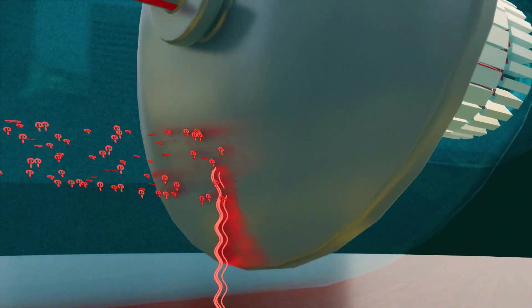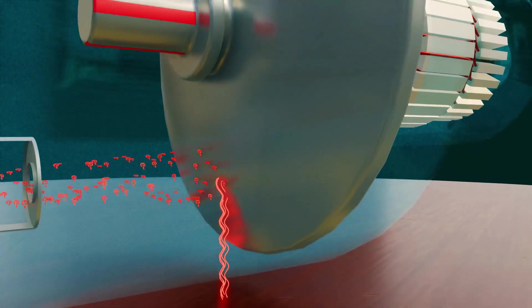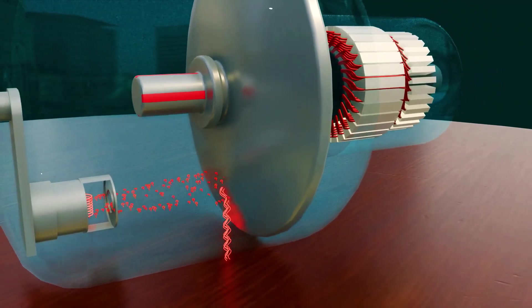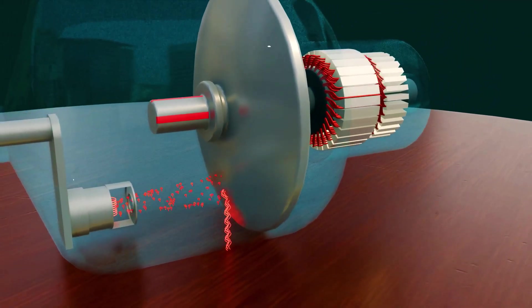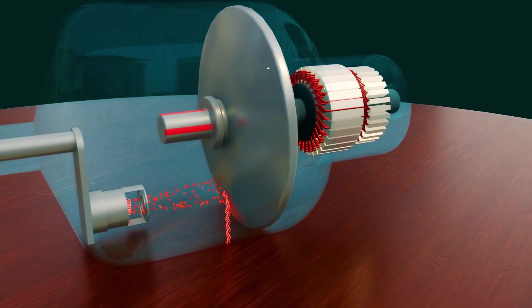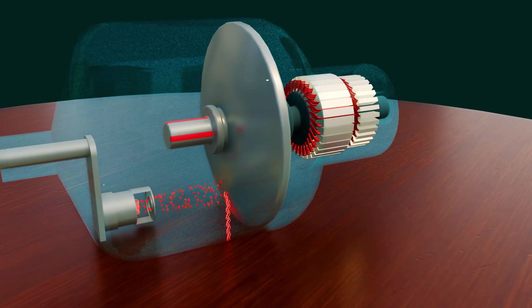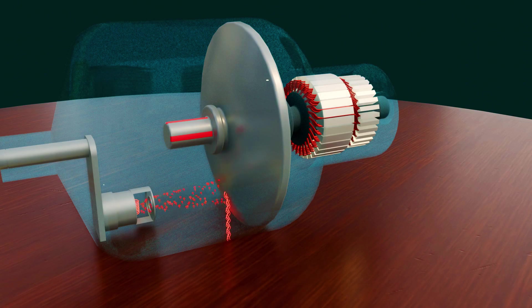Similarly, the anode helps balance the high energy levels of the electrons. When electrons strike the anode, part of their energy is released as X-rays, while the remaining energy is converted into heat by the anode. Interestingly, only 1% of the electrons' energy is converted into X-rays, while the remaining 99% is transformed into heat.